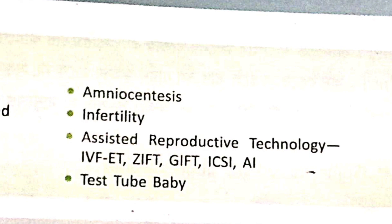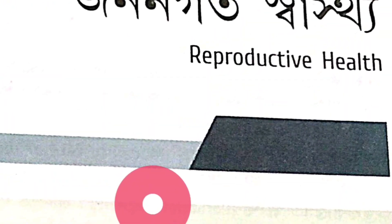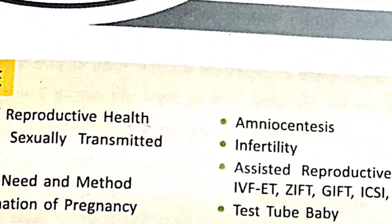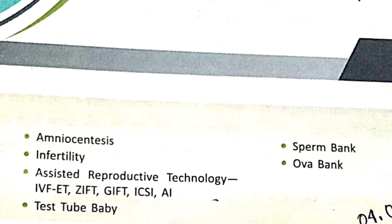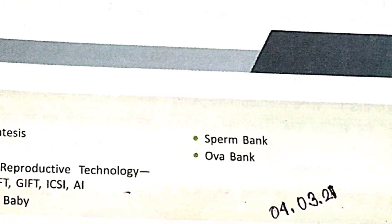The concept of test tube baby - what is the concept of test tube baby? How is it? So reproductive health, that is chapter number four. The first is Amniocentesis, and last is Sperm Bank and Ovum Bank. This is one of the most important chapters - sexual reproduction in flowering plants and human reproduction.